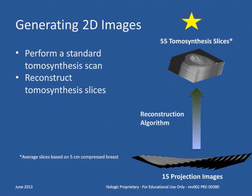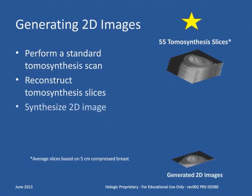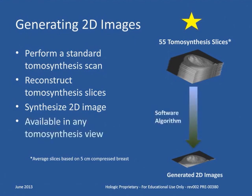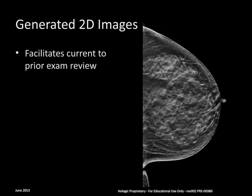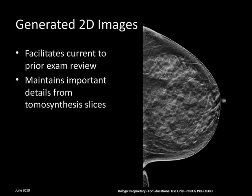The slices are 1 mm thick. For instance, a 5 cm compressed breast would typically generate 55 tomosynthesis slices, with an additional 5 slices reconstructed due to paddle tilt. Then, from the reconstructed slices, the C-View software algorithm is applied to the tomosynthesis data sets and creates the generated 2D image. The resulting 2D image emulates a true 2D image and is used as an aid while examining the tomosynthesis images, allowing comparison between the current study and prior 2D studies.